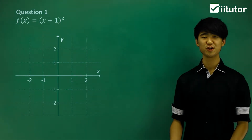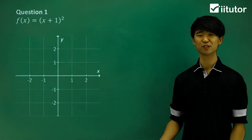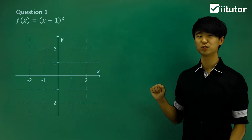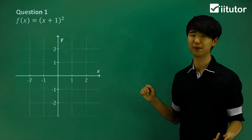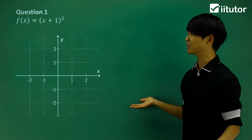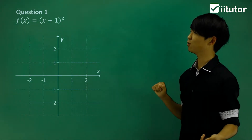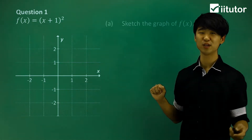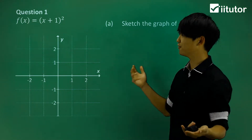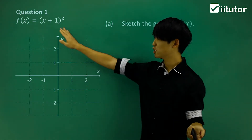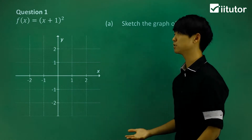We're going to be answering a question related to inverse functions. In this question we have a function that looks like a parabola — specifically f(x) = (x+1)². In part a, we need to sketch the graph of f(x), and since it's something squared, it's going to be some sort of parabola.